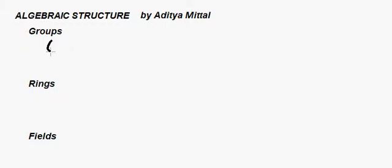We're going to write a group like (S, ★), where S is some set and ★ is some binary operator. For example, if S was the set of integers, then ★ could be a binary operator like addition, subtraction, multiplication, and so on.